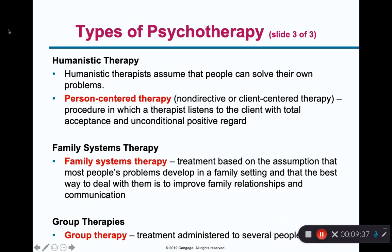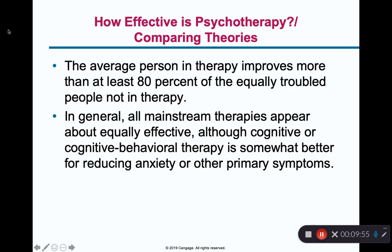Humanistic therapy focuses on a whole person-centered approach. It's all about self-actualization and fulfilling your potential, goal outcomes, and things like that. Family systems and group therapies are associated with improving unhealthy and harmful relationships, helping people heal in their relationships.